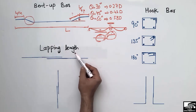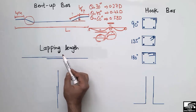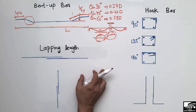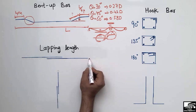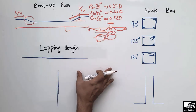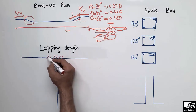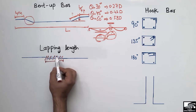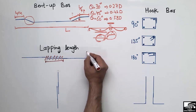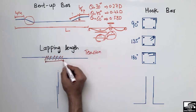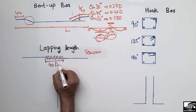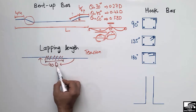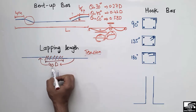Now, what is the overlapping length and why do we provide overlapping of steel bars in beams and columns? When the length of the beam or height of the column is greater than the available bar length, we overlap two steel bars. This overlap length for tension members — such as slabs and beams — is taken as 40d, where d is the diameter of the bar.